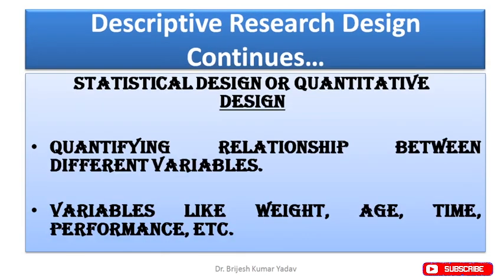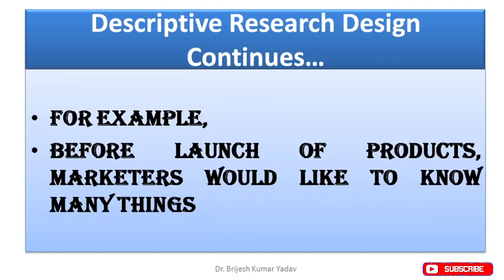The second method to conduct descriptive research design is statistical design, or quantitative design. Under statistical design, quantification of relationships between different variables is conducted. Variables like weight, age, time, performance, etc. are quantified. For example, marketers interested to know reactions before launching a product may compare the response of prospects to one bunch of products versus another bunch of products.